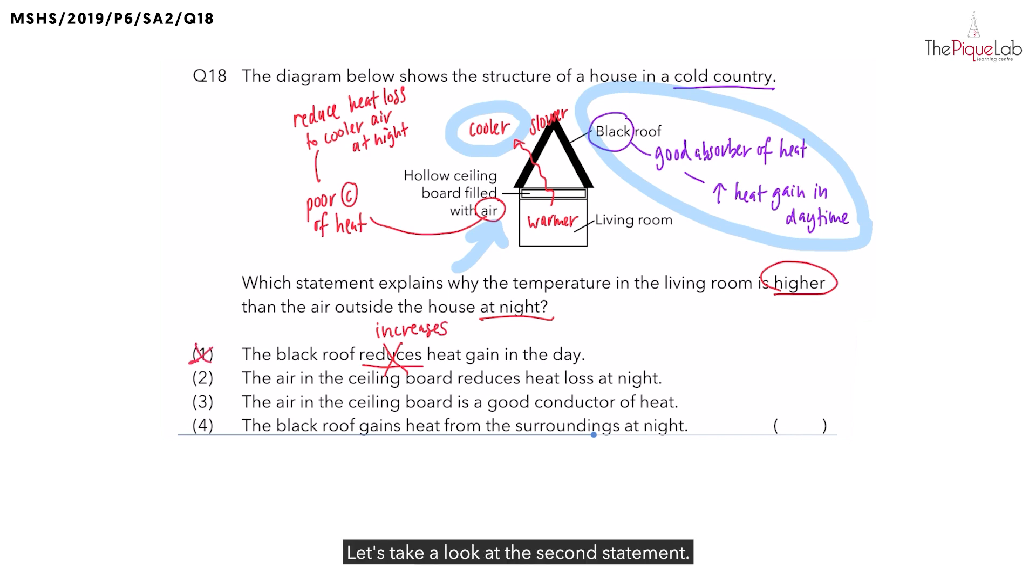Let's take a look at the second statement. The air in the ceiling board reduces heat loss at night. Is that true? Since air is a poor conductor of heat, it reduces heat loss from the warmer living room to the cooler air at night. So this statement is true, and it's our answer.